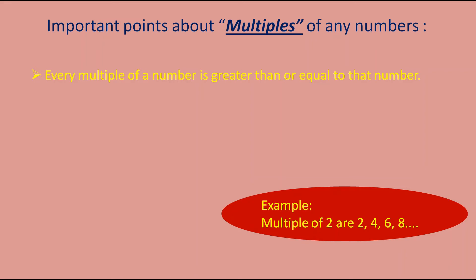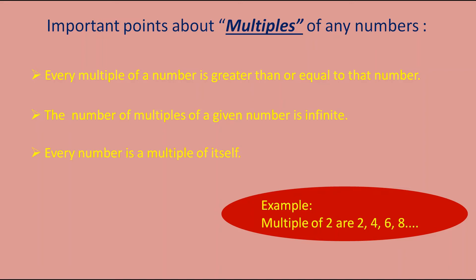Next point: the number of multiples of a given number is infinite. If you go on multiplying each and every number, you will get multiples of that number. Next point: every number is a multiple of itself. Two is the multiple of two because two ones are two, three ones are three — so the multiple of three is three, the multiple of two is two, and so on.